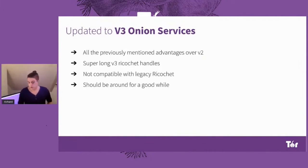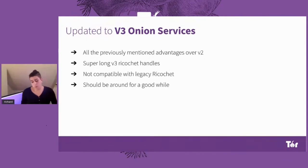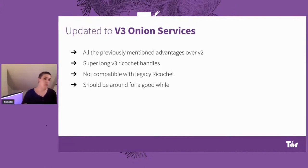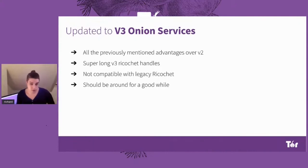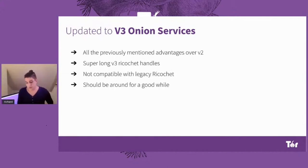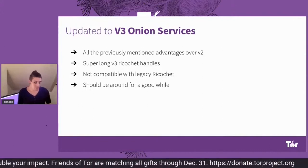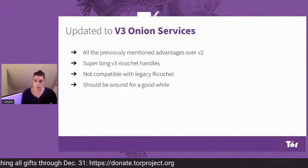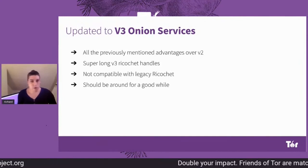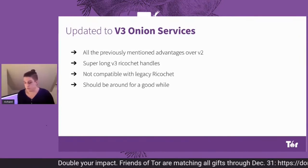Ricochet Refresh's new alpha has been updated to add support for V3 onion services, which has all the previously mentioned advantages over V2. Once you create a Ricochet onion service, there should be no way to enumerate all the onion services and identify this as a Ricochet user to pay attention to. As it's V3, you get those nice super long V3 Ricochet handles. It's not compatible with legacy Ricochet because they're speaking two completely different protocols — the protocol has changed slightly, made more secure based on feedback from an audit, and it just uses V3 onions which V2 doesn't know how to talk to.